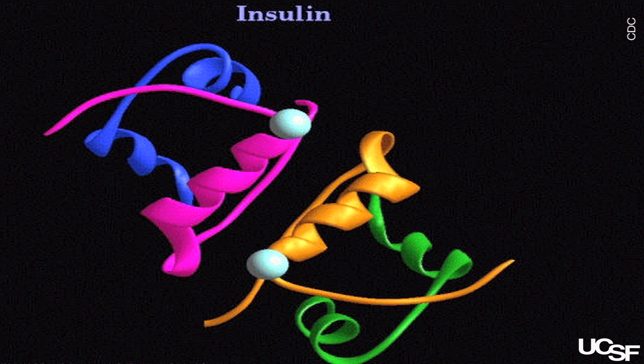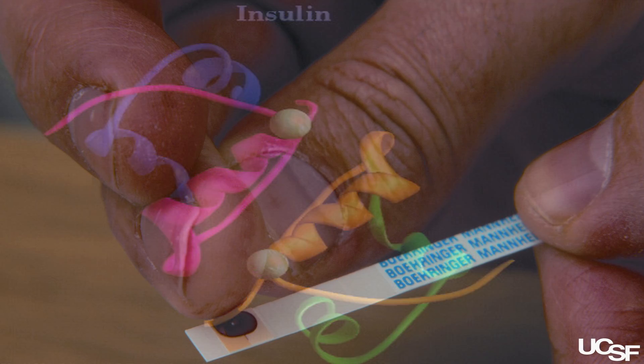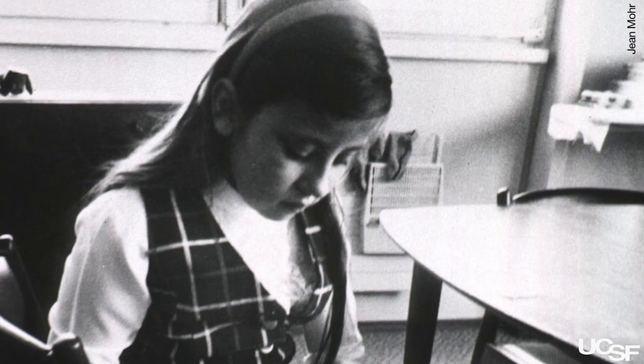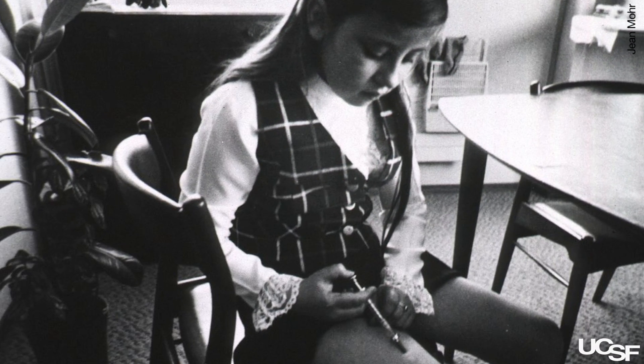Weak interactions allow proteins to change their interacting partners quickly under different conditions. For example, to control blood glucose concentration in response to a meal. And if this interaction is wrong, you may develop diabetes. Weak interactions are very important because they give cells or organisms the flexibility to deal with dynamic environmental conditions.